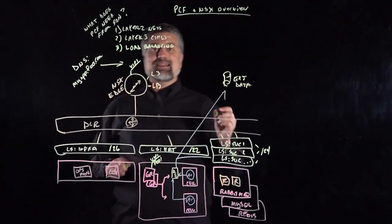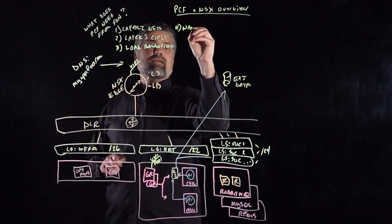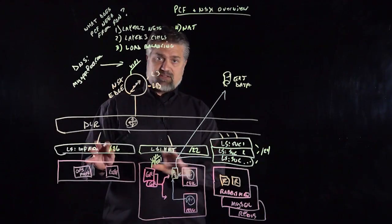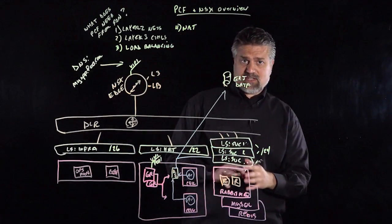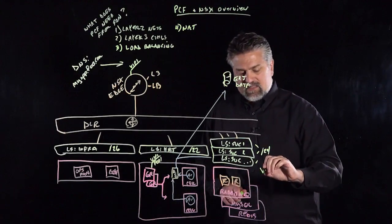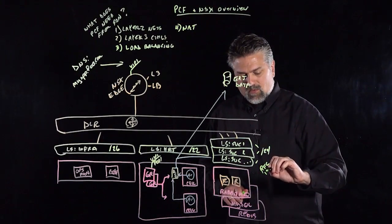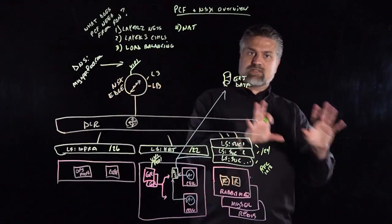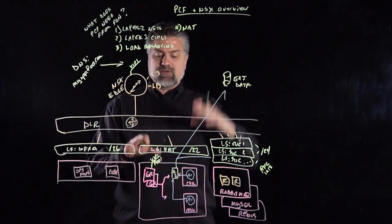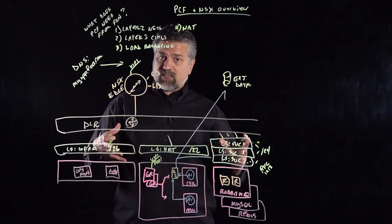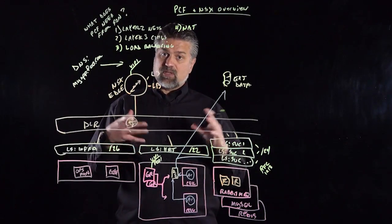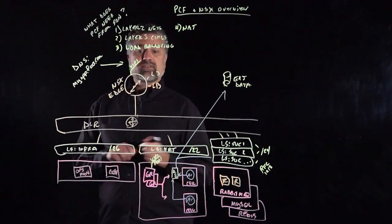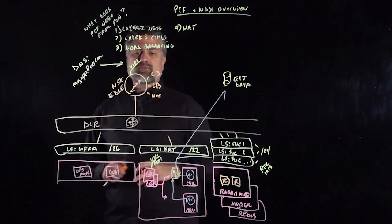We also want our SDN to be able to do NATing — that's SNAT or DNAT. The reason for that is all these logical switches — the infrastructure, the Elastic Runtime, and all our service logical switches — we really want these to be RFC 1918 networks. That way we can have a pattern deployment if we have to deploy Cloud Foundry in multiple instances, so that we're not consuming routable IP space inside of the enterprise. It's a best practice, gives us a scalable footprint, and something that can be repeated in an automated fashion. Our Edge is giving us NAT functions in addition to load balancing and Layer 3 controls.